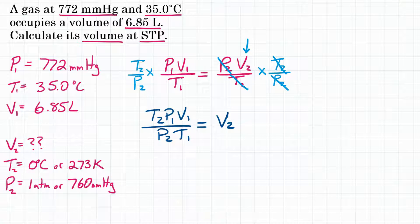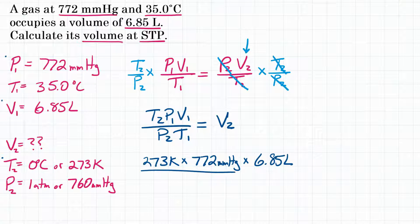Now we can plug in our values. For T2, we have 273 Kelvin, multiply that by P1 which is 772 millimeters of mercury, times V1 which is 6.85 liters. And that is all over P2, which is 760 millimeters of mercury. We're using that unit because that's the pressure unit given in the question.